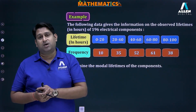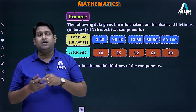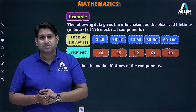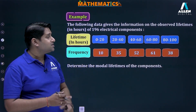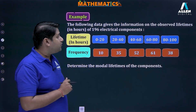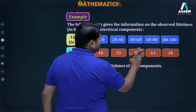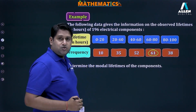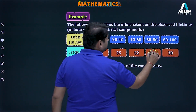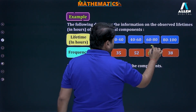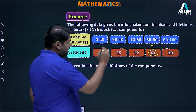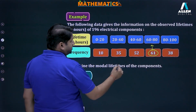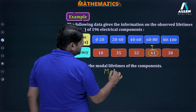We have to find the modal lifetime of the components. First, we identify the modal class by looking for the highest frequency. The highest frequency I can see is 61, so the corresponding modal class will be 60 to 80.